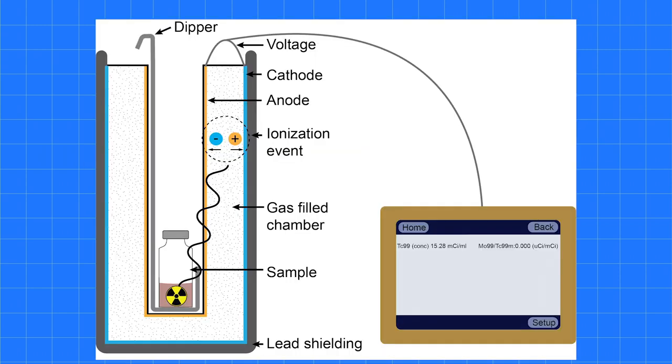A dose calibrator is used to test the eluate. A dose calibrator consists of two cylinders separated by argon gas. There is a current applied to one of the two cylinders. The current will not travel through the inert gas unless it is ionized.